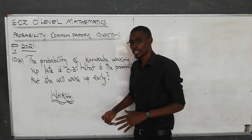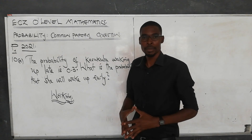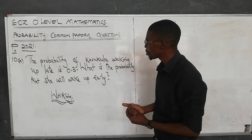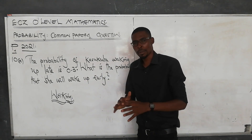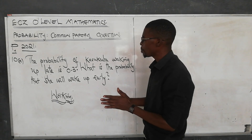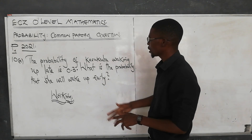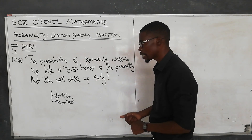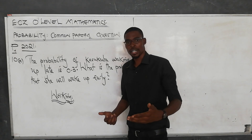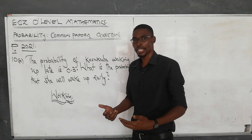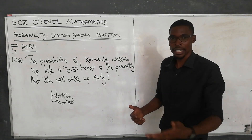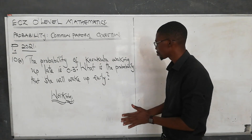This particular question — you understand that this is a very common question in paper 1. Check all the paper 1 question papers and you will find such a type of question, where you have to get the probability of an event occurring, provided that the probability of another event happening is given.